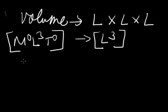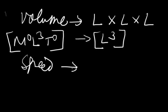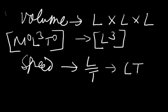Now, speed. Speed equals distance divided by time — the distance covered by a body with respect to time. That is length divided by time. Since no denominator can be used, it is written as LT⁻¹. So the dimension of speed is LT⁻¹, or M⁰ LT⁻¹.